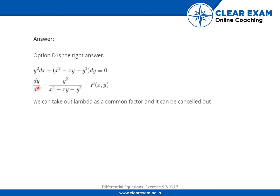Here dy/dx is equal to y² over x² minus x² minus y². We can take out lambda as a common factor and it can be cancelled out, so option D is the correct answer.